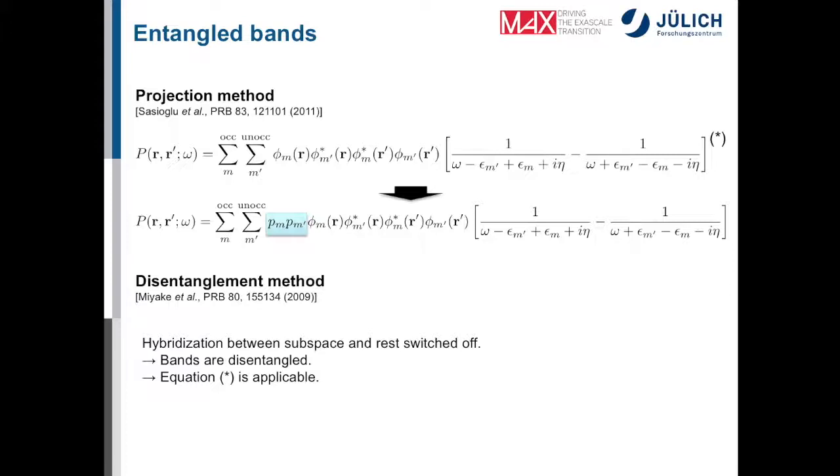There is another possibility that was proposed a few years before ours, two years before ours, by Takashi Miyake, Ferdi Aryasetiawan, and Imada. And they did another trick. Namely, they said, okay, the problem is the hybridization between the correlated subspace and the rest of the system. So we just put it to zero. They simply put to zero the coupling between the subspace and the rest of the system and then all bands are automatically disentangled. We don't have that problem anymore and we can just use the first formula.